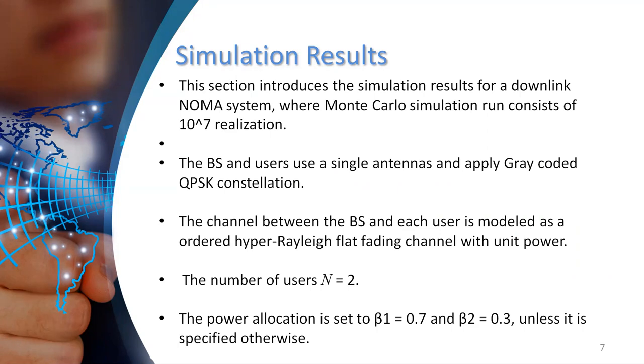and the base station applies Gray coding with QPSK constellation. The channel between the base station and each user is modeled as ordered hyper-Rayleigh flat-fading channel with unit power, and the number of users is two.